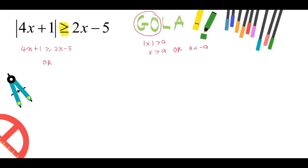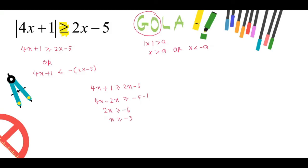For this question, absolute value of 4x plus 1 is defined as: 4x plus 1 greater than or equal to 2x minus 5, or 4x plus 1 less than or equal to minus (2x minus 5). Simplifying the first linear inequality gives x greater than or equal to minus 3. For the second inequality, expanding the negative first gives 4x plus 1 less than or equal to minus 2x plus 5.